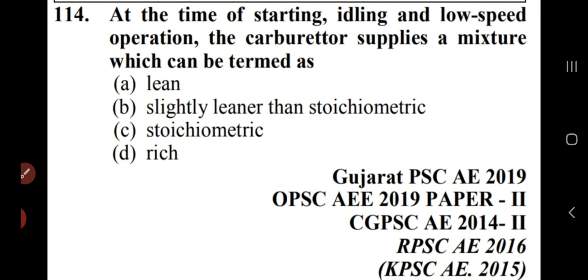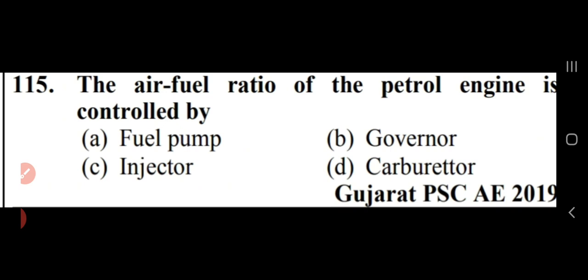At the time of starting, idling, and low speed operation, the carburetor supplies a rich mixture — option D. The air-fuel ratio is around 12.5:1. The air-fuel ratio of a petrol engine is controlled by the carburetor — option D. The main work of the carburetor is to mix the air and fuel.